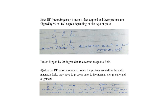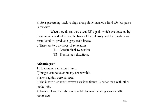A radio frequency pulse is then applied and the protons are flipped by 90 or 180 degrees depending on the type of pulse. After the RF pulse is removed, since the protons are still in the static magnetic field, they must precess back to their normal energy state and alignment. When they do so, they emit radio frequency signals which are detected by the computer and, based on intensity and location, are assembled to produce a grayscale image.